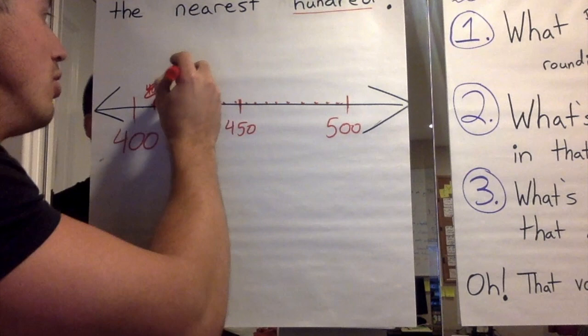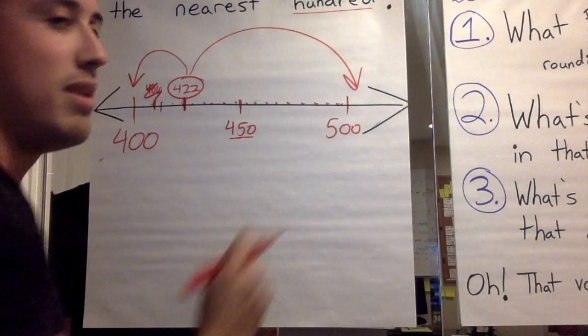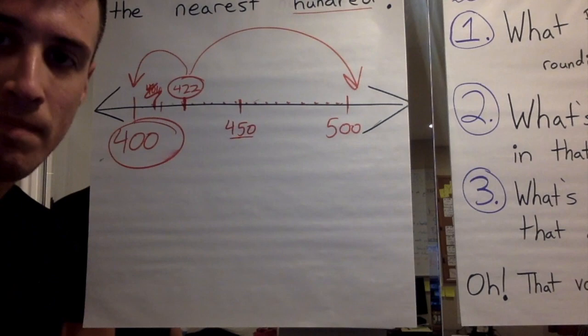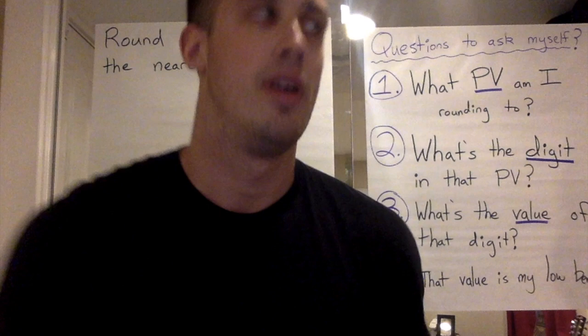Now that we know 422 is here, we need to ask: is it closer to our low benchmark or our high benchmark? Another way to think about it: is our number below the midpoint or above the midpoint? If it's in this section — below 450 — it rounds down. Is 422 in this section? Yes, it is. So we round down. It looks like I need to give my mom $400 for the mac and cheese. That's some expensive mac and cheese!